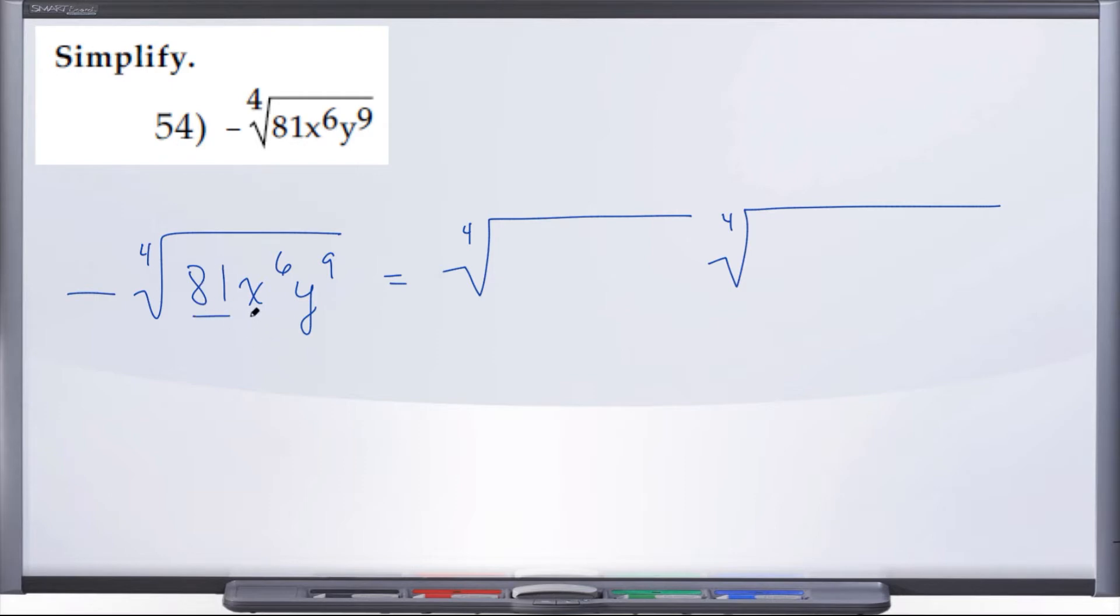So, 81. Does 81 have a fourth root? If you're looking at your index, or rather your exponent or power reference sheet, you'll notice that yes, 81 does in fact have a fourth root, and because 81 has a fourth root, all of 81 is considered good.